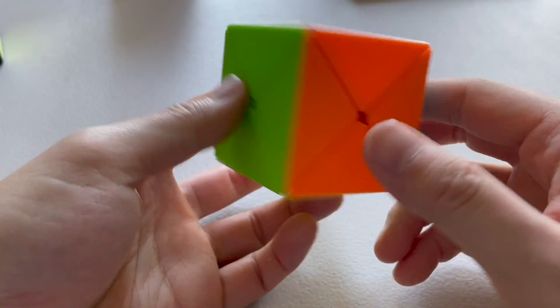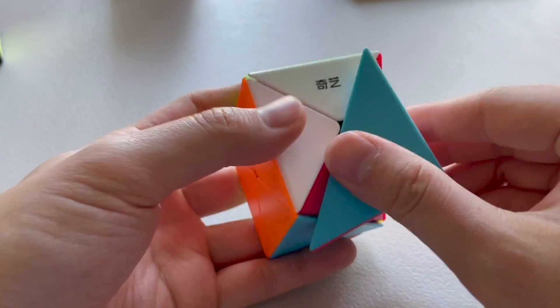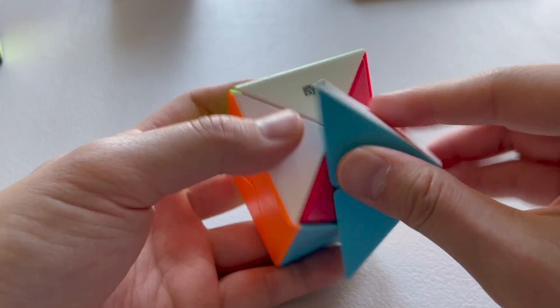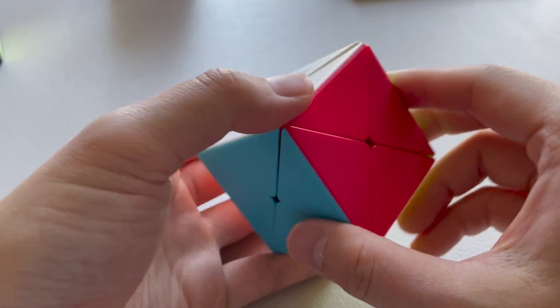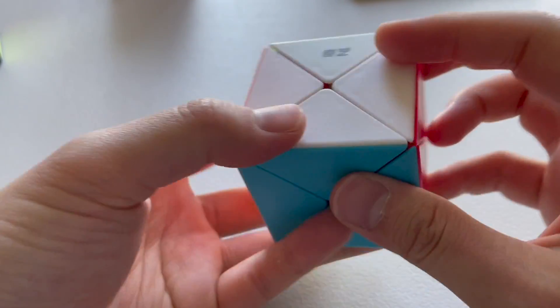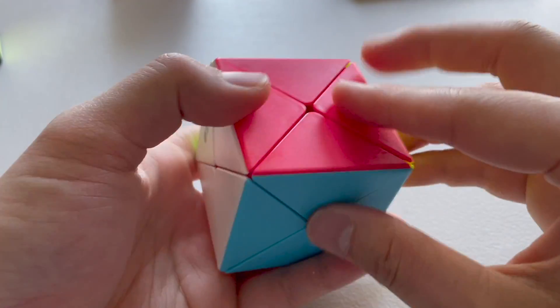So this cube I have right here, the turning is a little sticky. The plastic's matte. And it really requires a lot of precision. So it gets stuck a lot if you're not used to this cube.